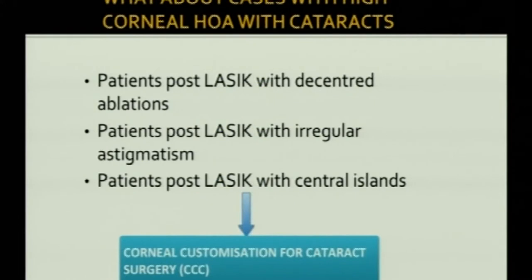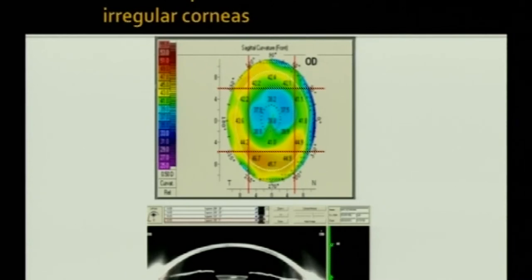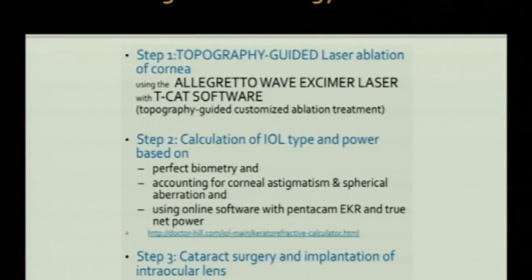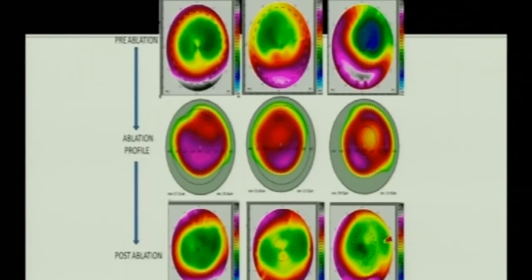A surgeon's job doesn't end there — we also need to manage patients who underwent LASIK long back and now present with decentered ablations, irregular astigmatism, or central islands along with cataract. For these, regularize the surface before implanting an IOL. A topography-guided treatment is performed to regularize the corneal surface; after stabilization of keratometry values documented at six-week intervals, biometry is planned and cataract surgery performed — yielding much better visual quality.